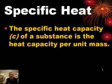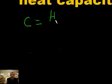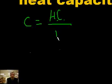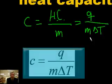Another related concept is specific heat. It's like heat capacity except it's not for a whole object but per unit mass. Specific heat capacity C is heat capacity divided by mass. Since heat capacity was the ratio of Q to temperature change, specific heat is Q divided by mass times delta T.